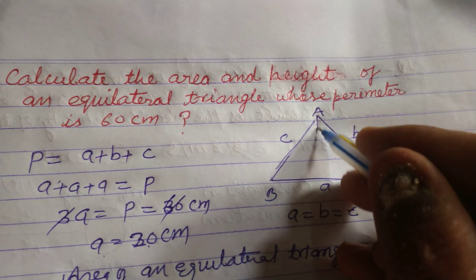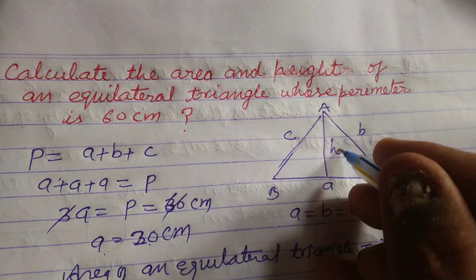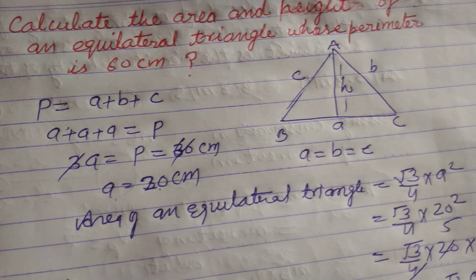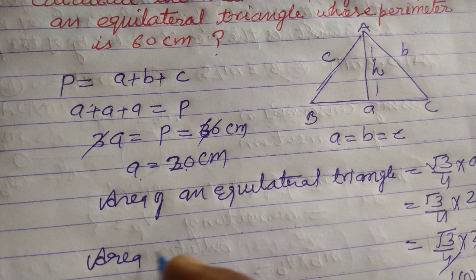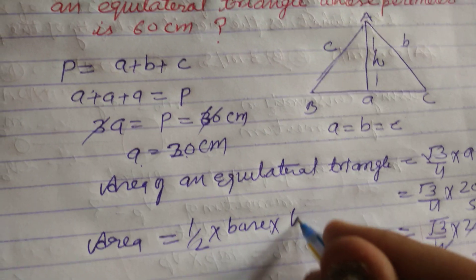Now we can also find the area of an equilateral triangle by using area equal to 1 half base into height.